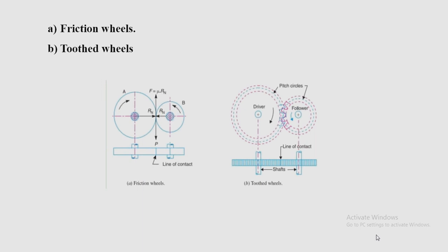As long as the tangential force exerted by wheel A does not exceed the maximum frictional resistance between the two wheels, they rotate together. But when the tangential force exceeds the frictional resistance, slipping will take place between the two wheels. The friction drive is not a positive drive — likewise belt and chain drives are not positive drives. In order to avoid slipping, projections called teeth are provided.